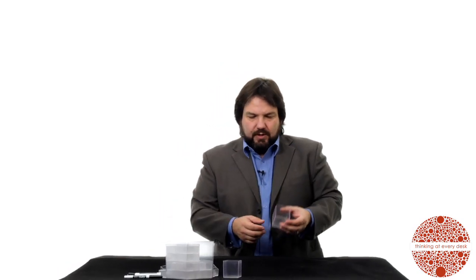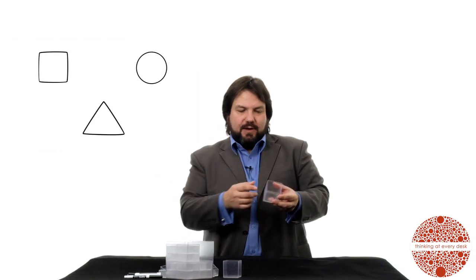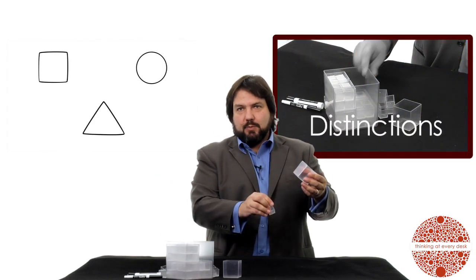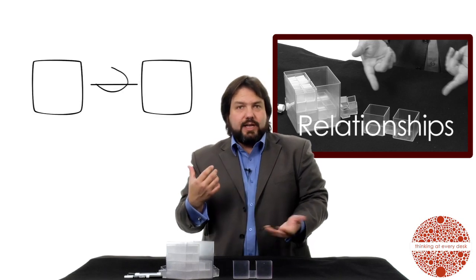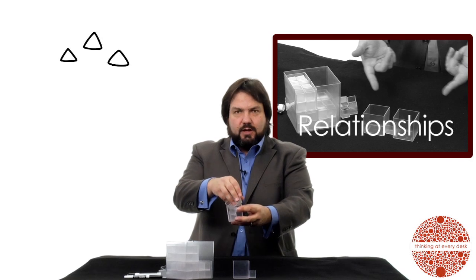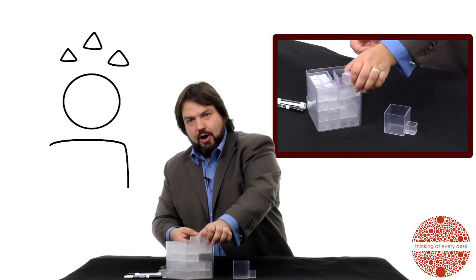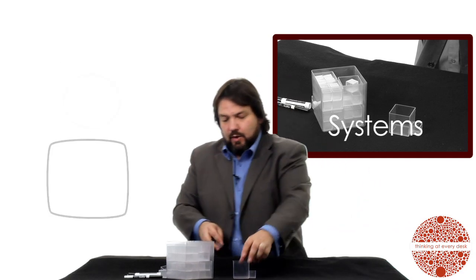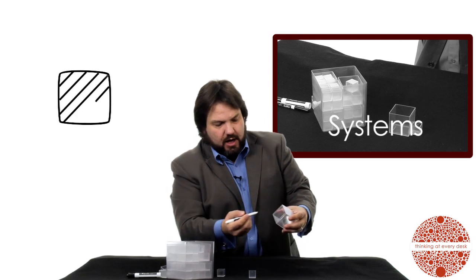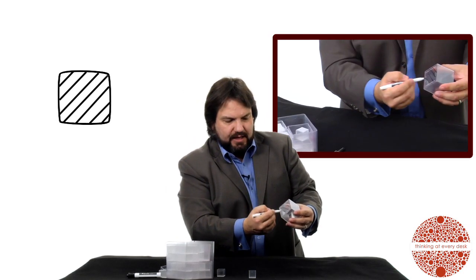If you know how to DSRP diagram, you already know how to use Think Blocks and vice versa, because they're completely co-related. For example, if you draw a square or a circle or a triangle in a diagram, that's just like using a large block, a medium block, or a small block. If you want to relate two things together, or put parts into a whole, we can do that with Think Blocks or with diagrams. We're using the same language in different tools.